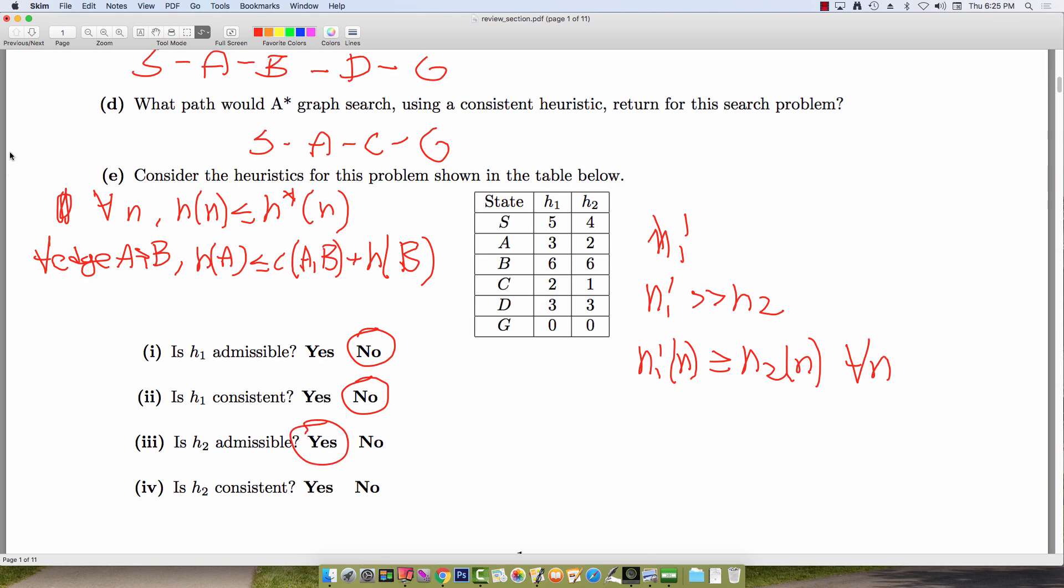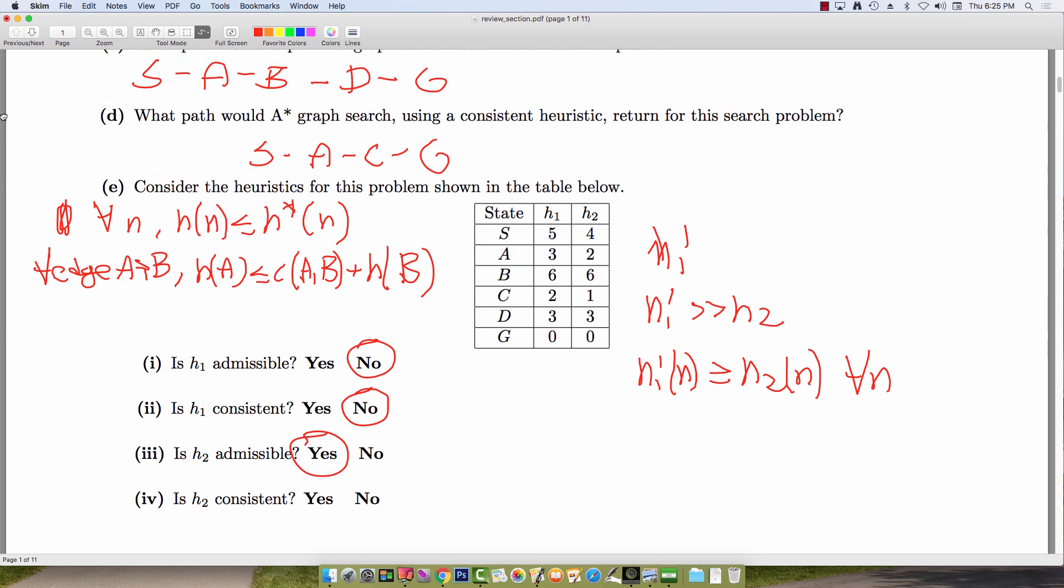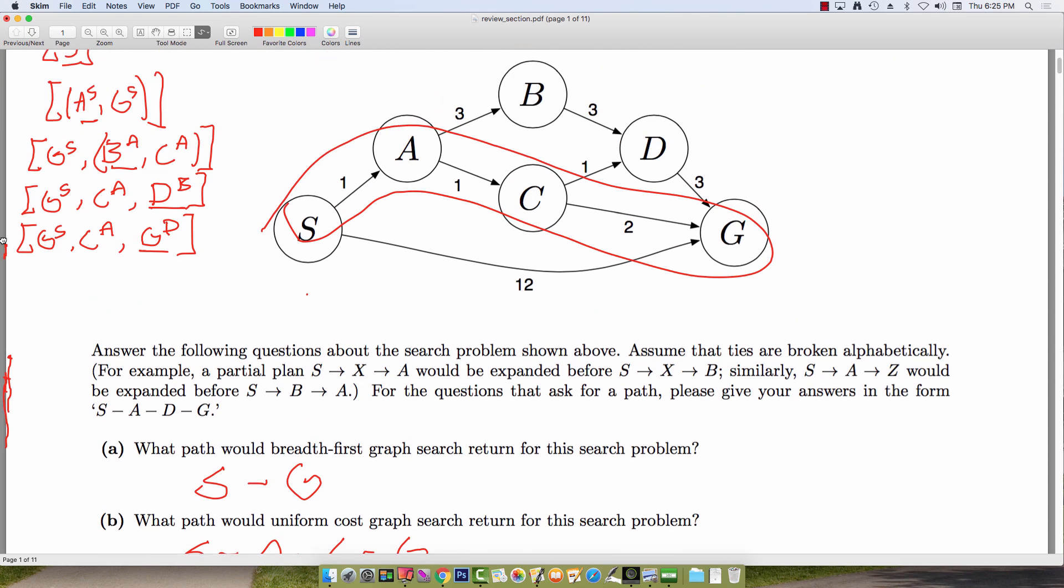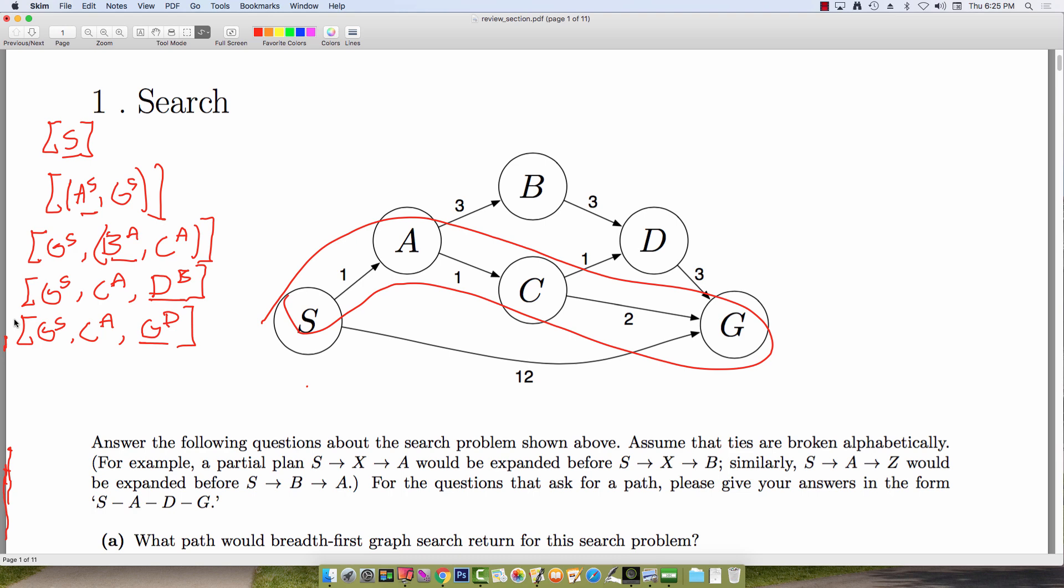To test consistency of the second heuristic H2, we'll go back to our graph and check for a node that violates that triangle inequality. So in particular, if we look at the heuristic value H(S), which is four, the heuristic value for the next node A is two, but the edge cost from S to A is one. And so we'll violate the triangle inequality because we do not have that four is less than or equal to one plus two, which is three.